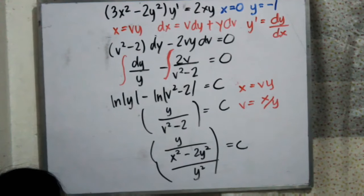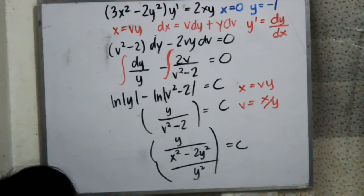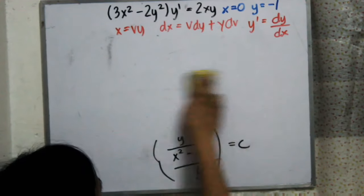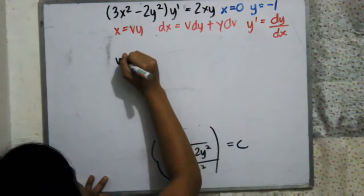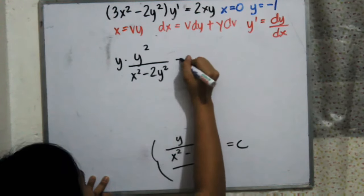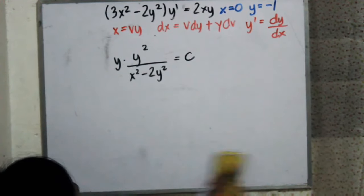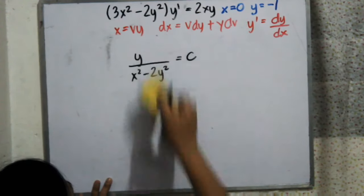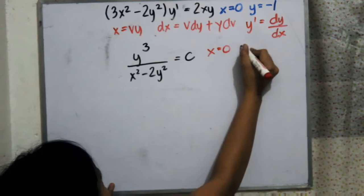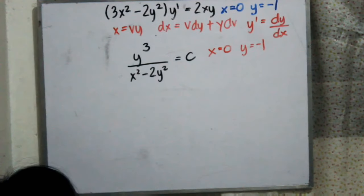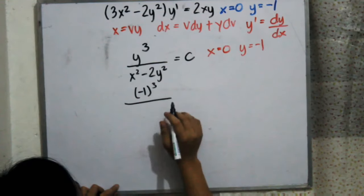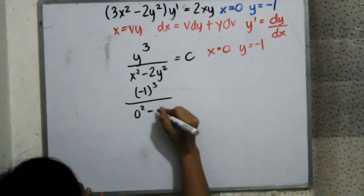After substituting v equals x over y and simplifying, we multiply y by y squared to get y cubed in the numerator. This gives us y cubed over x squared minus 2y squared equals C, or equivalently y cubed equals C times x squared minus 2y squared. Now we substitute x equal to 0 and y equal to negative 1.